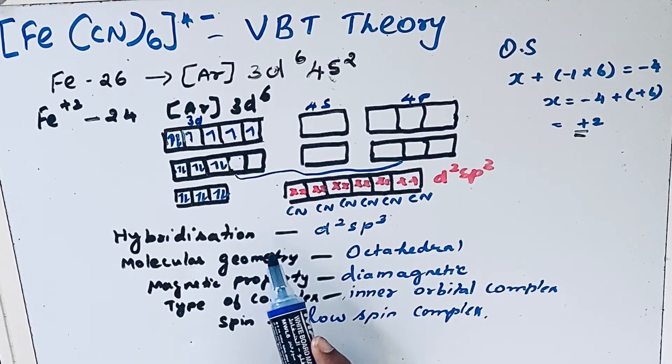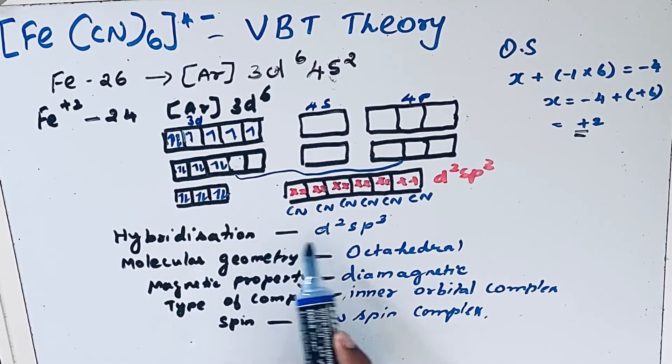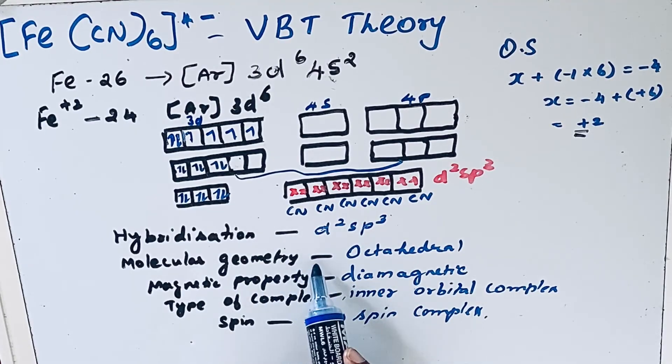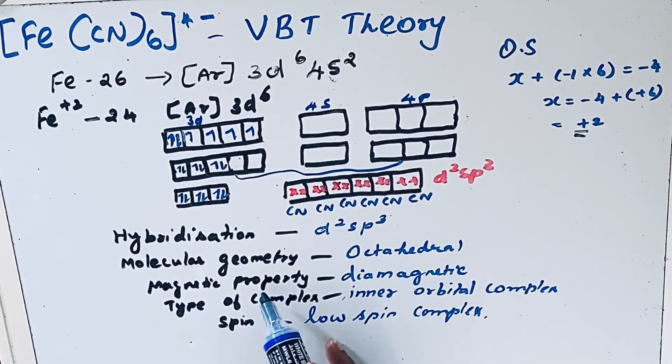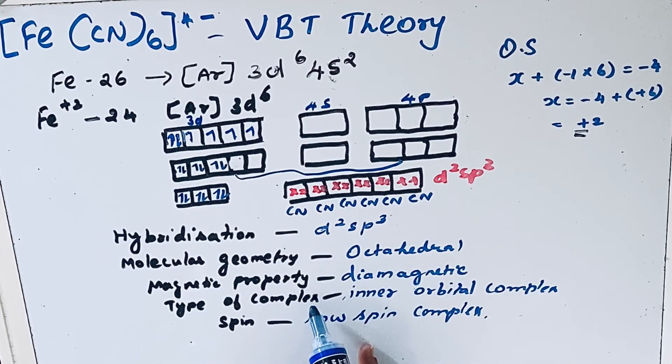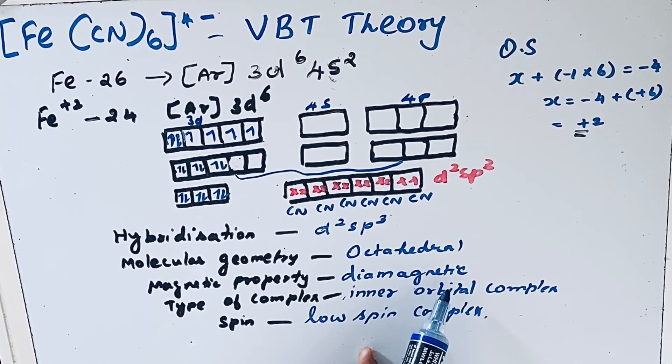In summary, for [Fe(CN)6]4- complex: hybridization is d2sp3, molecular geometry is octahedral, magnetic property is diamagnetic, it is an inner orbital complex, and it is a low spin complex. Thanks for watching.